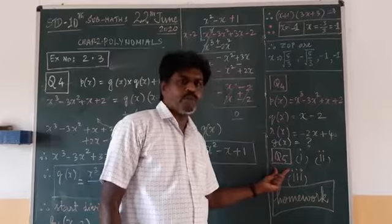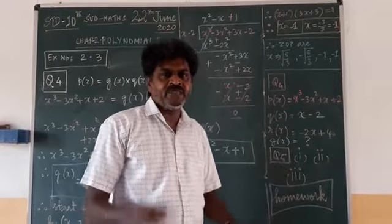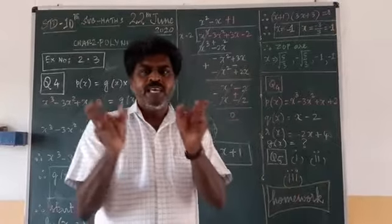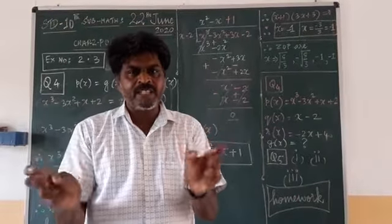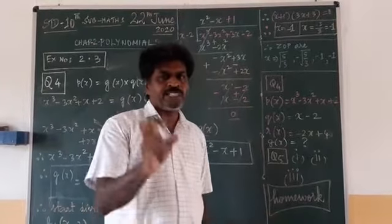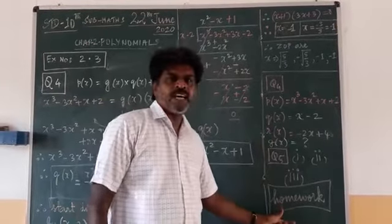Last one problem, question number 5 is there. It is very simple problem. You think and do it. Just you have to find equal degree polynomial equation and equate it first. That's all. First number, second number, third number. Simple problem. You take it as homework and try.